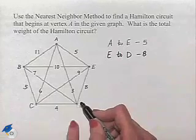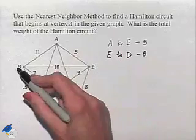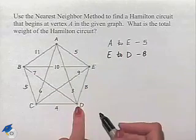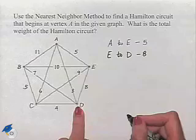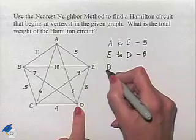Now we're at D. We're not going to be able to go back to A or E, but we have only two choices. We can go to vertex B with a weight of 7, or to vertex C with a weight of 4. The weight of 4 is smaller, so we'll go from D to C.